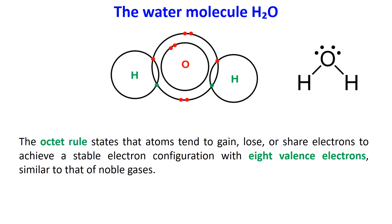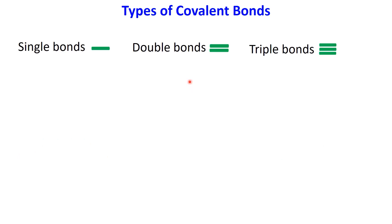Now that we understand what a covalent bond is, let's dive deeper into the types of covalent bonds. Covalent bonds are classified based on the number of electron pairs shared between the atoms. The three main types are single bonds, double bonds, and triple bonds.